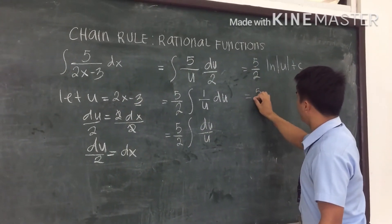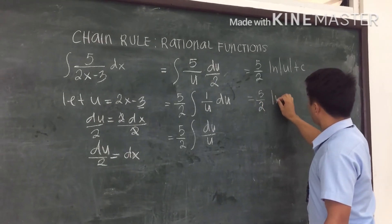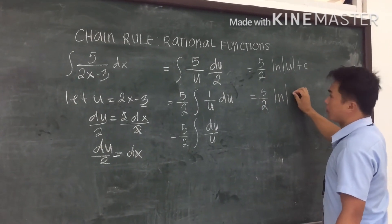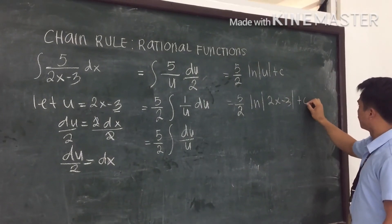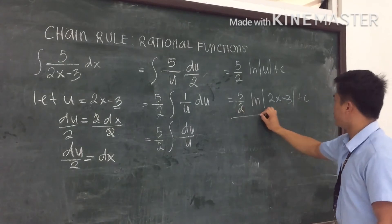So 5 over 2 ln absolute 2x minus 3 plus c. This is our final answer.